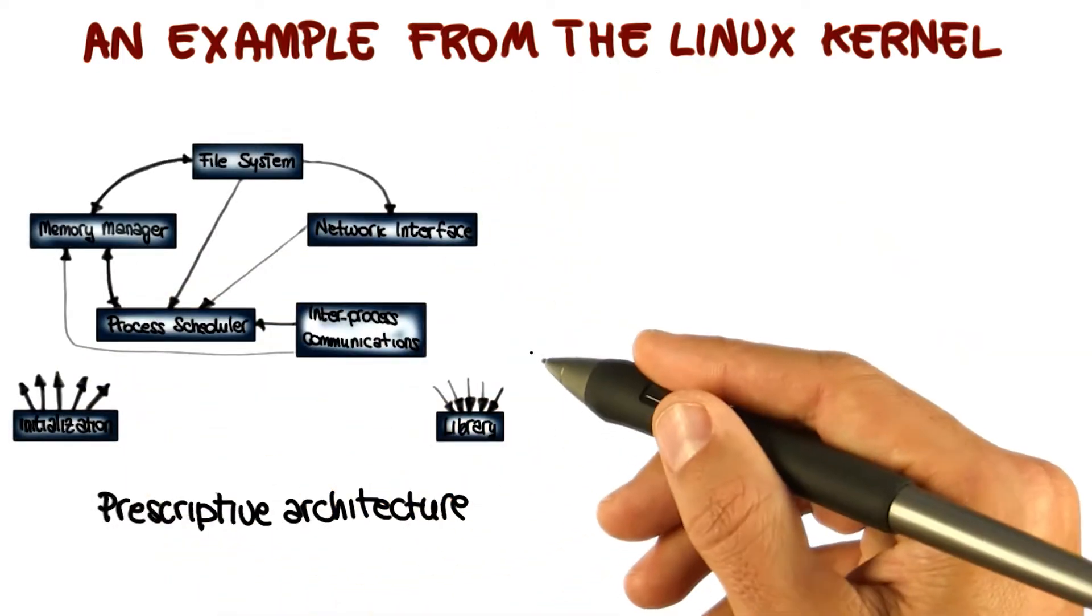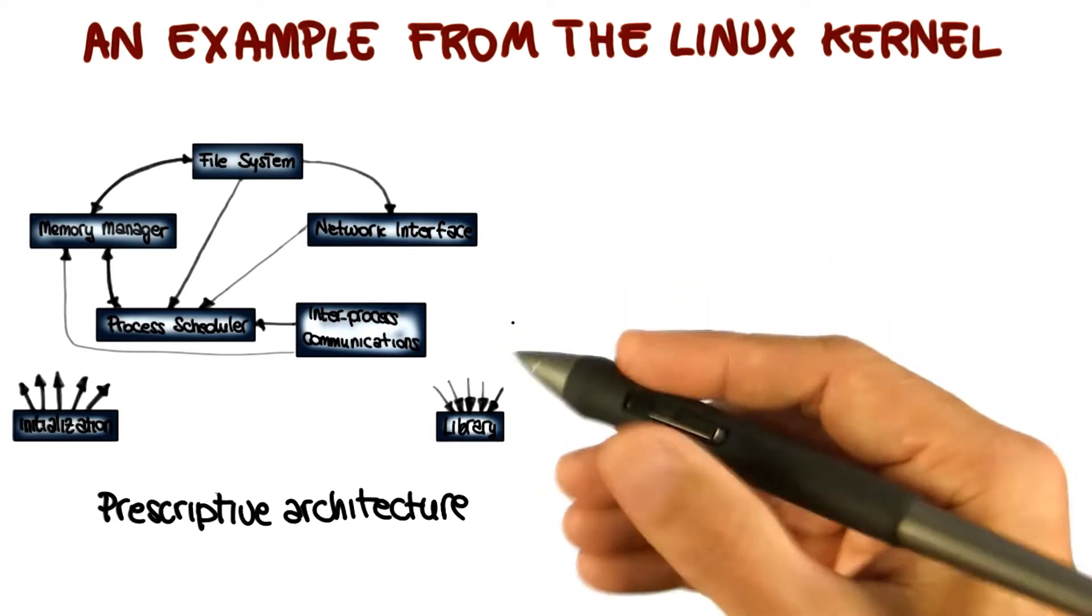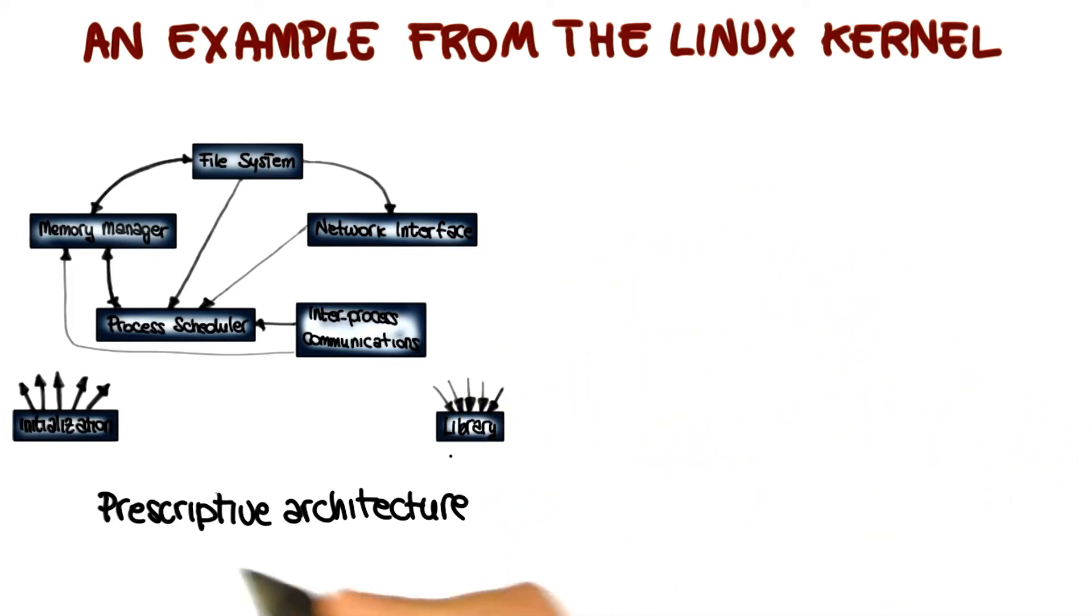The one that I'm showing you here on the left is the software architecture at the level of Linux's main subsystems. So this is the prescriptive architecture of Linux at the level of Linux's main subsystems.